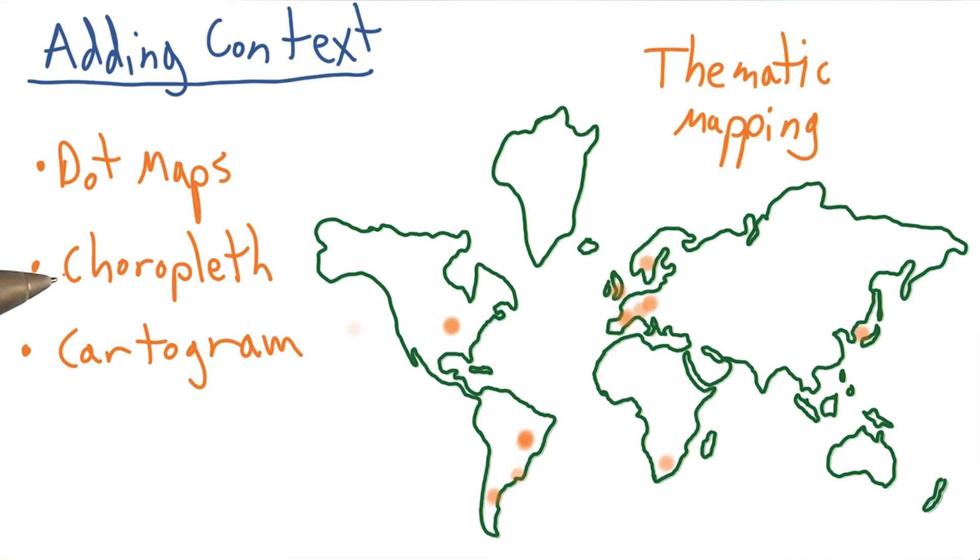Choropleth maps, which color areas such as counties, states, or countries, depending on the data they represent.